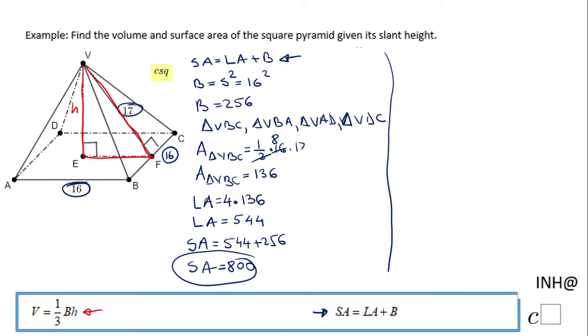We know the hypotenuse is 17, and we know this is going to be half of 16, because E is in the center of the square. So we have this triangle: 17, 8. We need to find X, which is the height of the pyramid. I'm going to use the Pythagorean theorem.